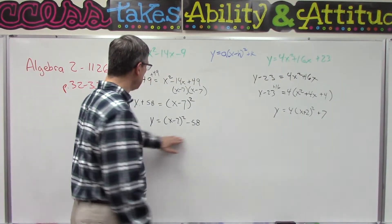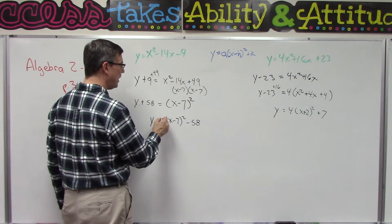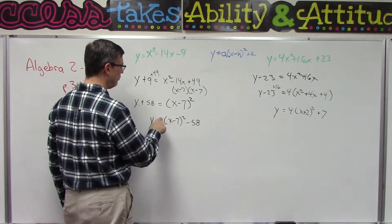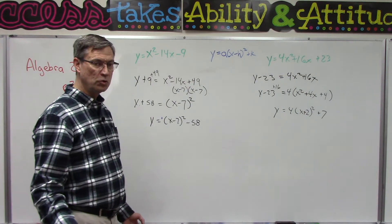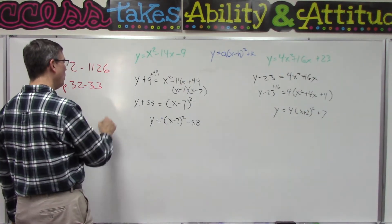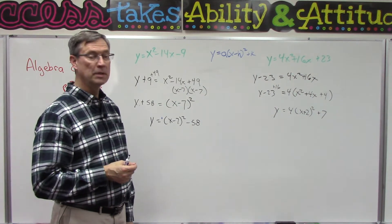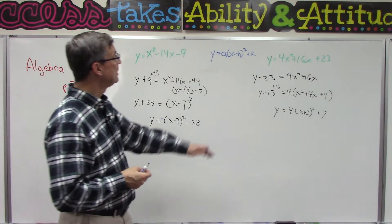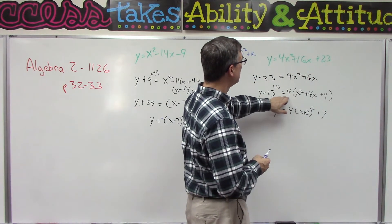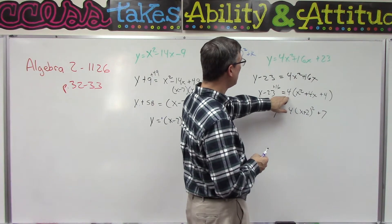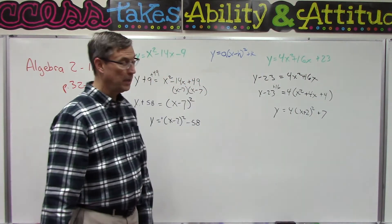First of all, we're looking to see if it's positive or negative out front here. In this case we have a positive. If there's no negative we can assume it's positive. If it's positive we know it's going to open up. I don't think they make a big deal out of that, but if we factored out a negative number, then the graph would open down.